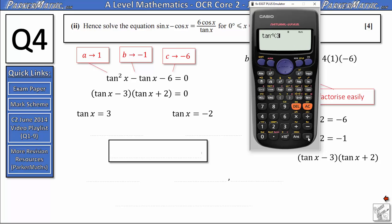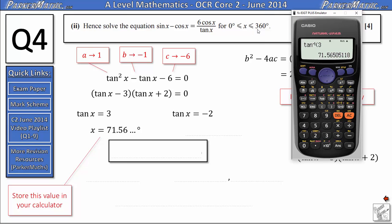So inverse tan of 3 gives me 71.56 and so on. Because I'm looking for all the solutions between 0 and 360 I might be using this solution again later. So I'm going to store it in my calculator. To do that on a Casio calculator you press shift and then the button with store written above it. And then you press any of these red letters here. I'm going to store it under letter A. And on my calculator it says the answer has been stored as A up here. So I can use that later now.